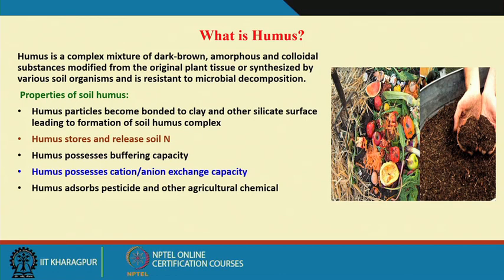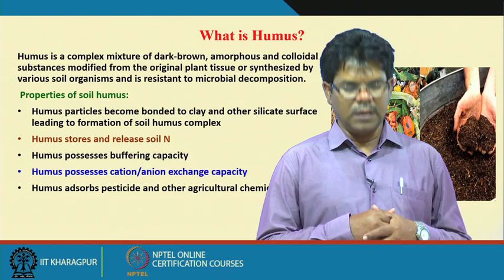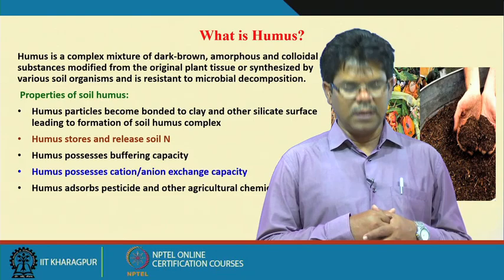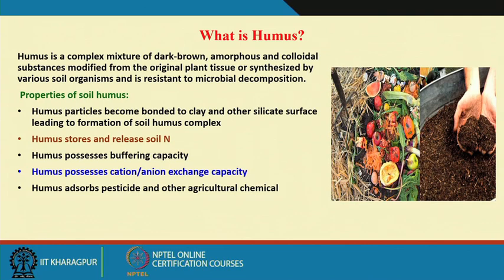As you know, humus is one of the important constituents used for maintaining and improving soil health on a long-term basis, and by using compost it enriches the soils with humus. What is humus? Humus is a complex mixture of dark brown, amorphous and colloidal substances modified from original plant tissue or synthesized by various soil organisms, and is resistant to microbial decomposition. Humus is responsible for building and improving soil physical properties.